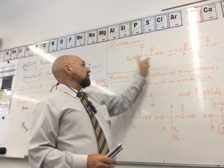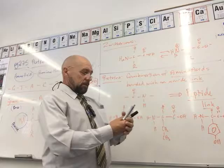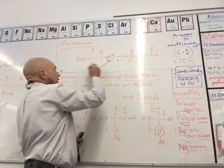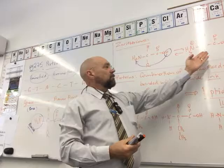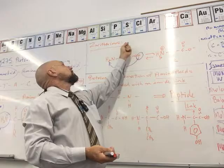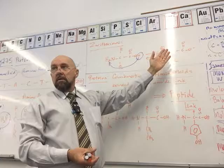A key characteristic of an amino acid is that it exists in two structures that are in equilibrium — because we've got both an acid and a base in the one molecule. It makes sense that the acid will donate the proton to the base, giving us what's called a zwitterion.